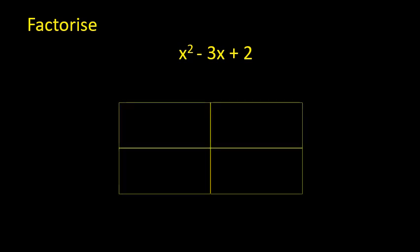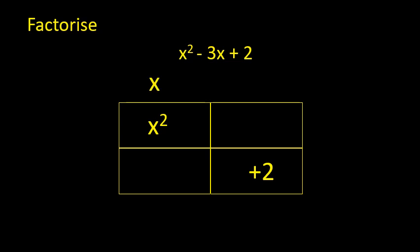First I'm going to draw my window. In the top left-hand corner, I'm going to write x squared, and in the bottom right-hand corner, I'm going to write plus 2. I can write x on the top and the side, as they multiply to give x squared. I need the other two terms to multiply together to give plus 2, but when I add them together, they need to give minus 3, since all terms must add to give minus 3x.